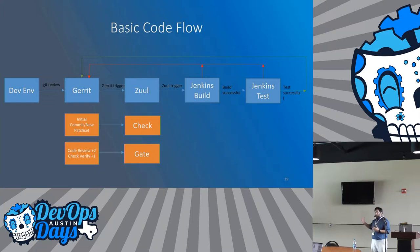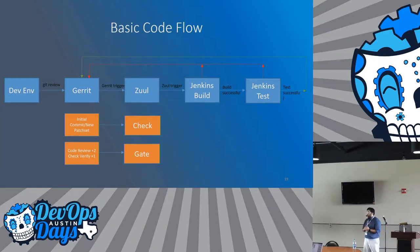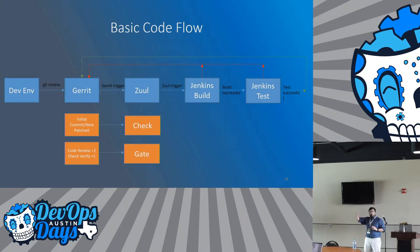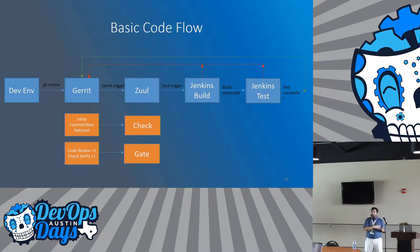Zuul is the pipeline engine we are using — it monitors all of these Gerrit events, similar to how Jenkins monitors Gerrit events. From the Zuul events, all it's doing is pipelining the tools: it triggers all the build and check jobs, build and test jobs in Jenkins. When that's done, a vote comes back from Jenkins saying whether the test passed or not, and that allows Gerrit to move the code and votes forward.